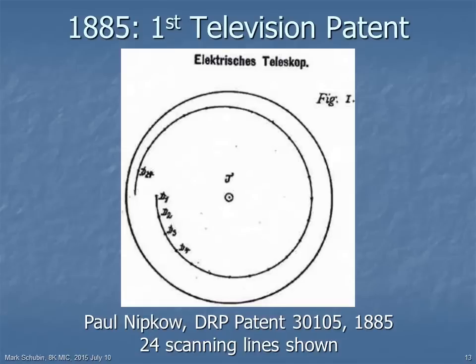Nevertheless, the first television patent was issued in Germany in 1885 to Paul Nipkov. Redmond chose not to patent his system — he thought it was of importance to the public. The scanning mechanism that Nipkov chose was a spinning disk with a spiral of perforations. As you can see from the patent diagram here, he chose 24 perforations, which would be 24 scanning lines of resolution.